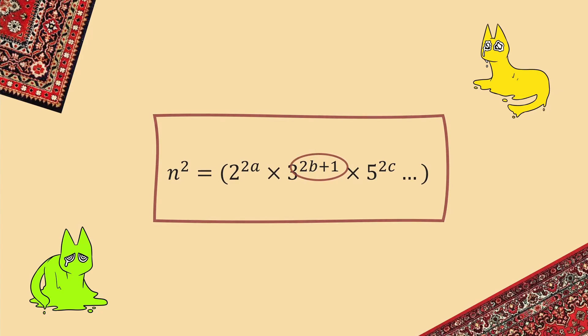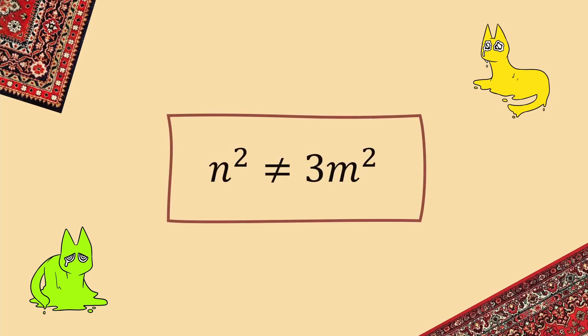So just like before, it's impossible for the number on the right to be a square number. And then we can do the same mathematical shuffling as earlier, to show that there is no rational representation of the square root of 3.